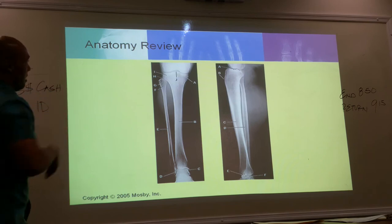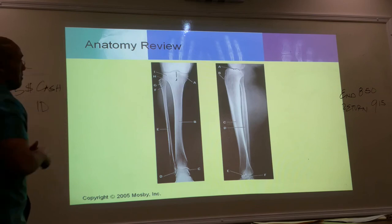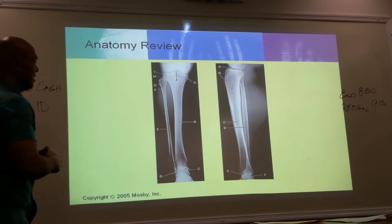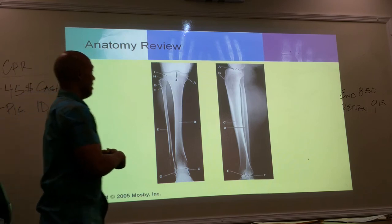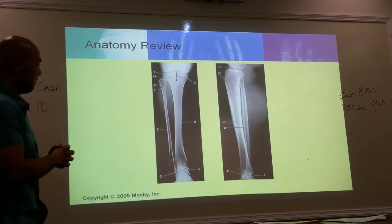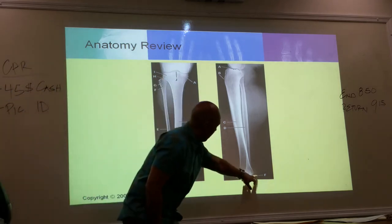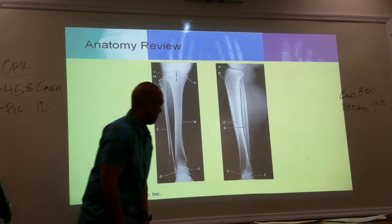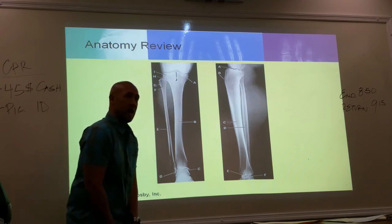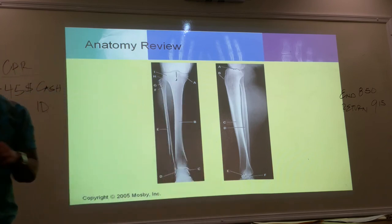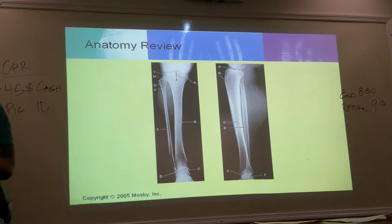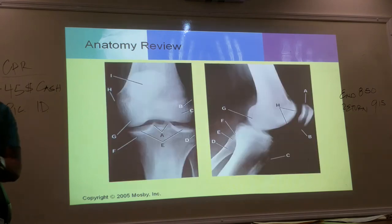On the lateral view: A is the same as J — the eminence. B is the tibial tuberosity — bony projection, rough surface. C is the shaft or body. F is the lateral or fibular malleolus. E is the tibial malleolus. The joint between the fibula and tibia at the top is the proximal tibiofibular joint. The distal tibiofibular joint is at the bottom.